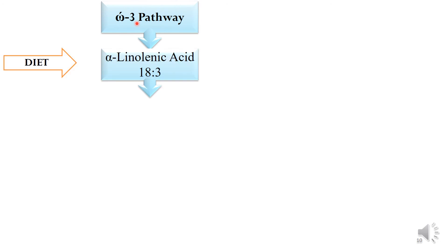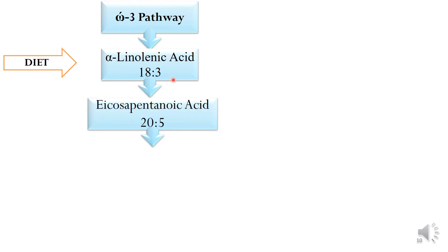The omega-3 pathway: from the diet, alpha-linolenic acid is received in the body. Alpha-linolenic acid is an 18:3 essential omega-3 fatty acid. Once it is received in the diet, it undergoes enzymatic reactions in the human body and forms eicosapentaenoic acid, which is a 20:5 omega-3 fatty acid.